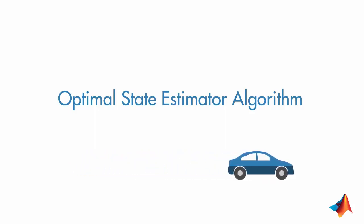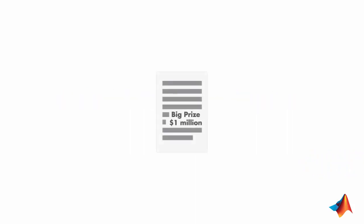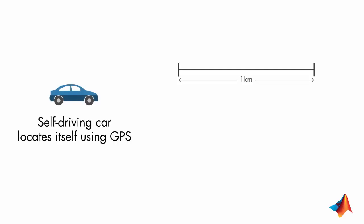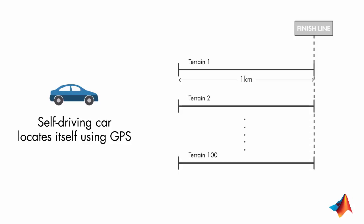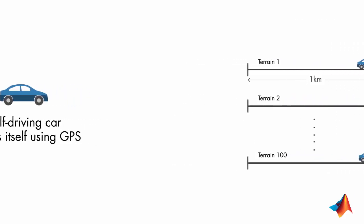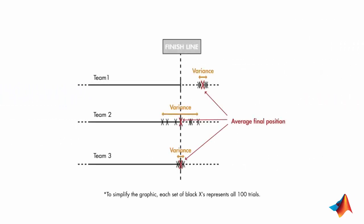Let's revisit the example that we introduced in the previous video. You join a competition to win the big prize. You are asked to design a self-driving car that needs to drive 1 km on 100 different terrains. In each trial, the car must stop as close as possible to the finish line. At the end of the competition, the average final position is computed for each team, and the owner of the car with the smallest error variance and an average final position closest to 1 km gets the big prize.